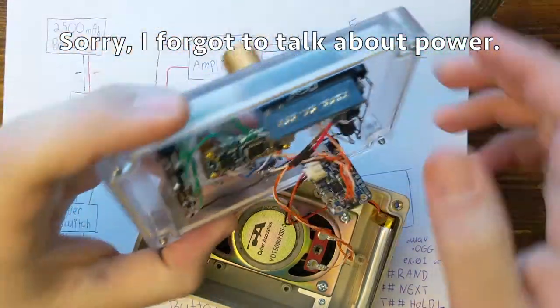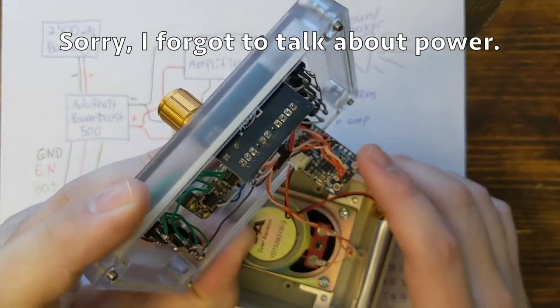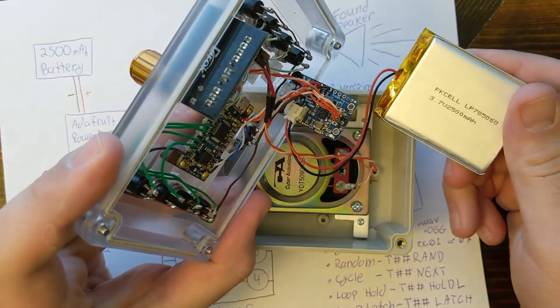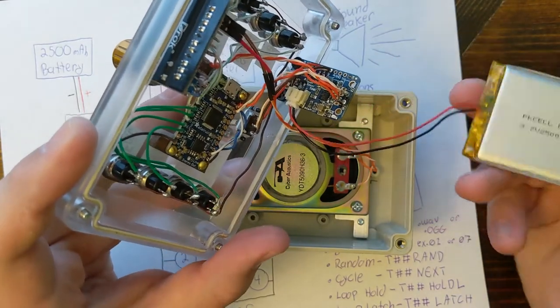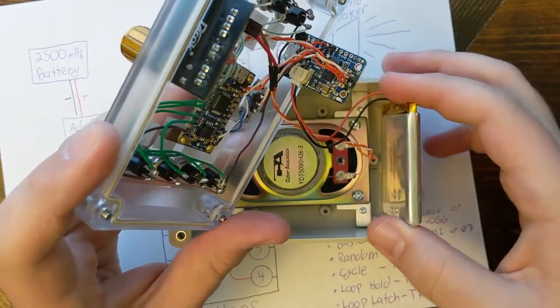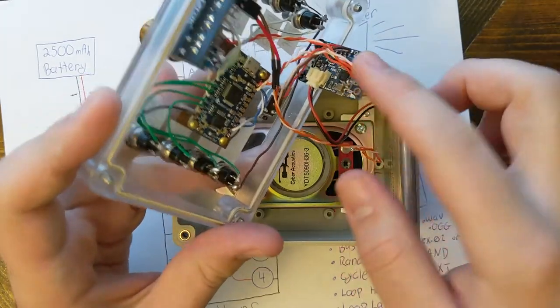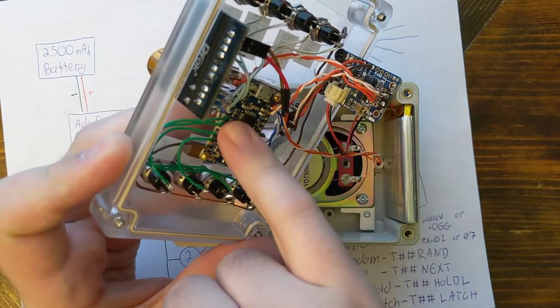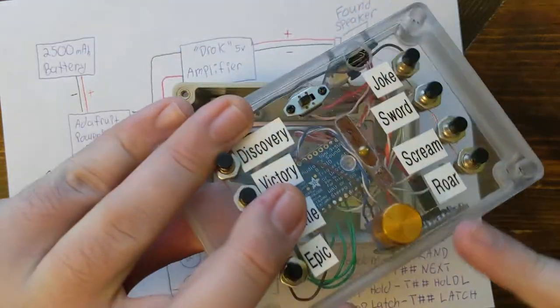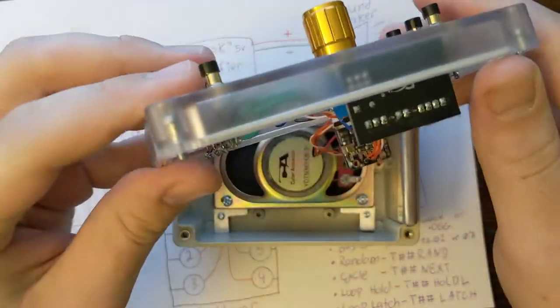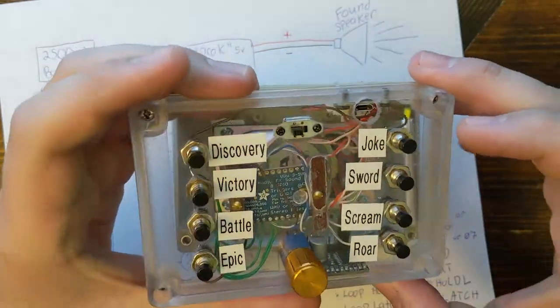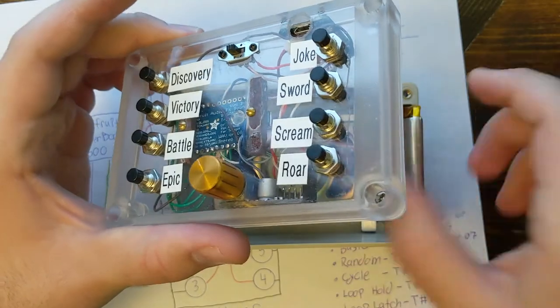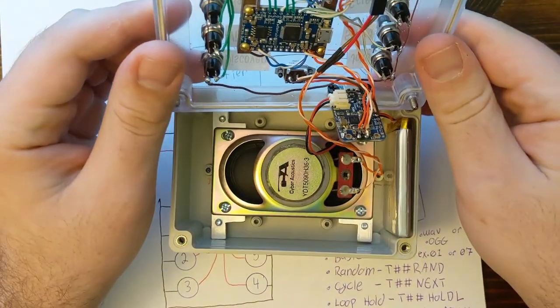To power it, I'm using the same Adafruit power boost that everyone else uses in their projects. So, we're going from a 2500 lithium battery. Going to the power boost. And then, here, I'm having the power come out of this. And it's powering both the soundboard and the amplifier. I drilled a hole in the top. That way, I can easily plug in a USB cable and recharge the battery without having to take the box apart. It's been working well.